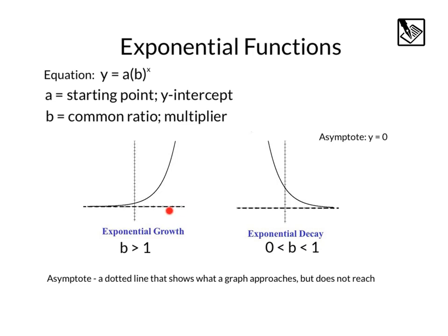If you look closely at the x-axis, there's a horizontal dotted line. We call that an asymptote, and this is at y equals 0. An asymptote is basically a dotted line that shows what a graph approaches but does not reach. For example, if we take a value and keep multiplying by 1 half, it's going to get smaller and smaller, but it's never going to cross that y equals 0 line.